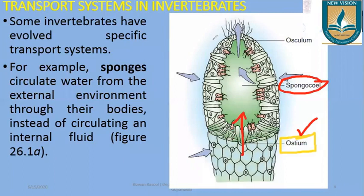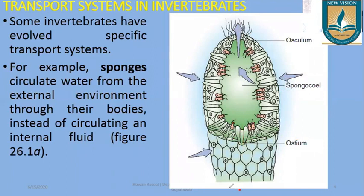The spongocoel is in contact with every cell of the sponges, so whatever excretory material is produced inside the body enters into the spongocoel from each and every cell, and from there it is eliminated to the outer environment through the same pores. This water system helps in transport inside the body and also elimination of substances to the external environment in sponges.